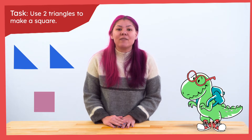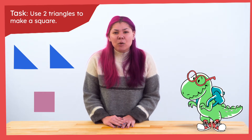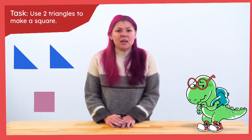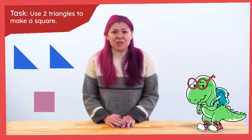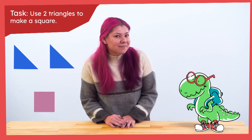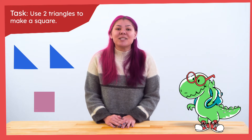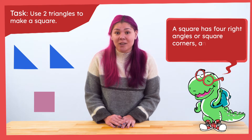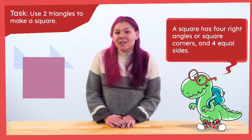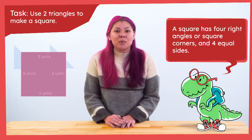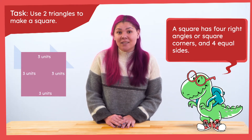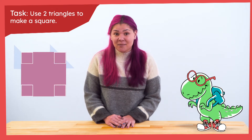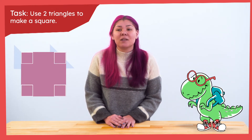We know that we have to use these triangles to make a square. How will we know how to use the triangles to make a square? How do we know a shape is a square anyway? I heard someone say that we can call a shape a square if it has four right angles or square corners and four equal sides. When we look at a square, we can see it has equal sides because each side measures three units long. The shape also has four right angles because we can make a square at the vertices.